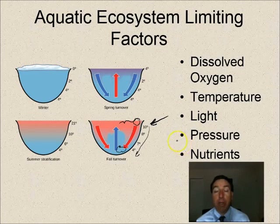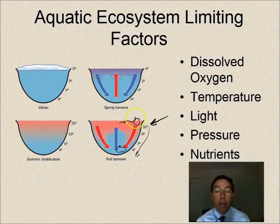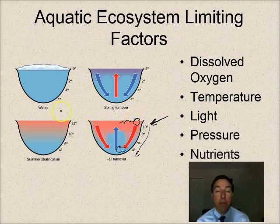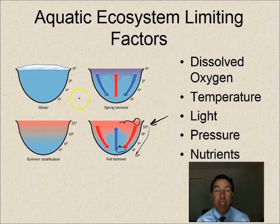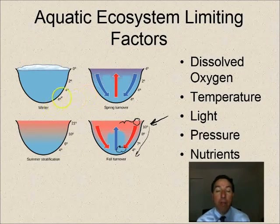You need nutrients in order to grow plants in aquatic ecosystems, and if you don't have enough nutrients then you don't have primary productivity. Now let's look at what happens with lakes during different seasons. This is a freshwater lake — these are more common in northern lakes and we don't see this much in Florida, but there are certain seasonal things that happen.